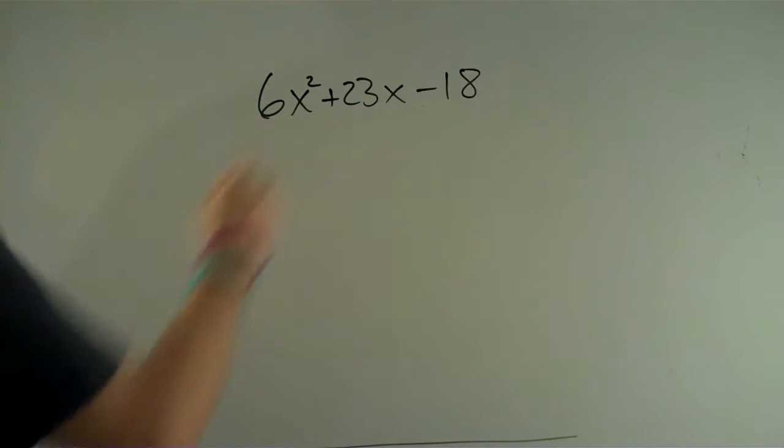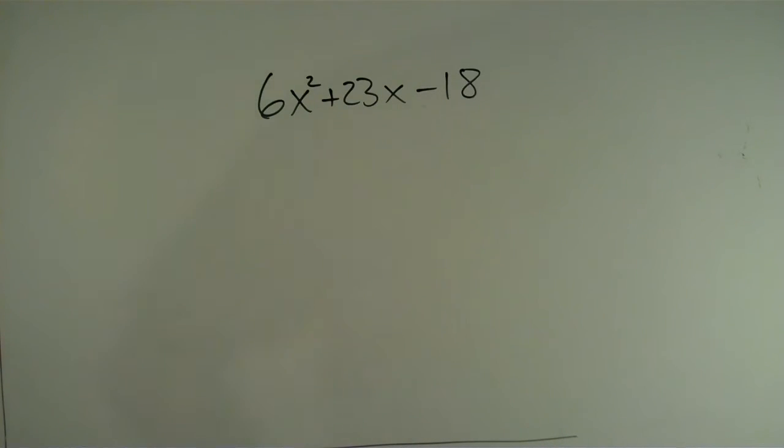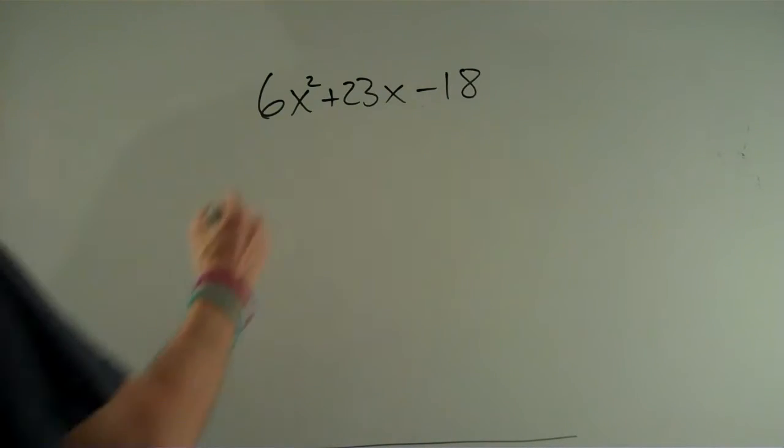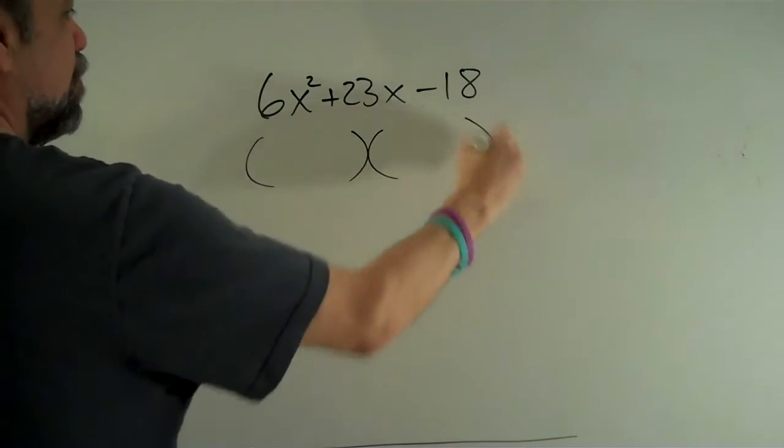Okay, in this video we're going to factor the rather messy looking trinomial 6x² + 23x - 18. Okay, well let's just dive right into it, write our parentheses there.